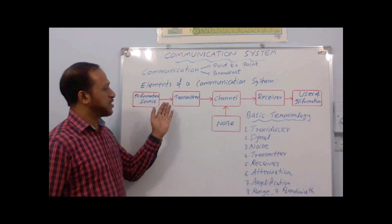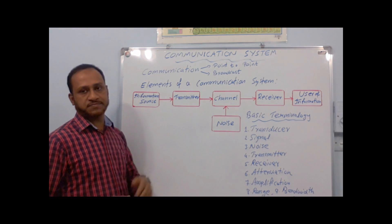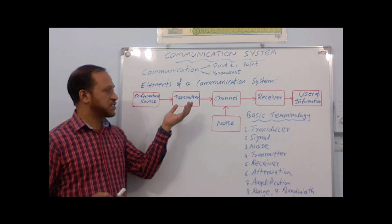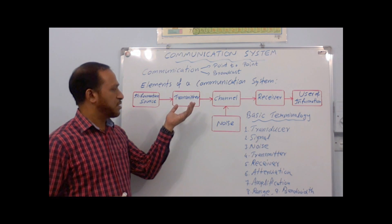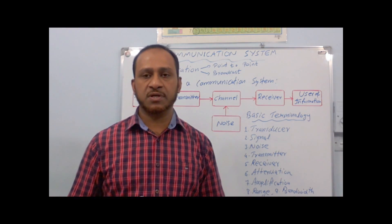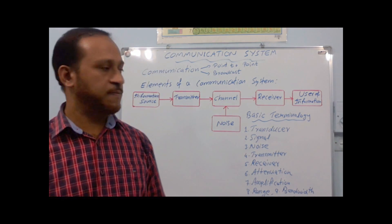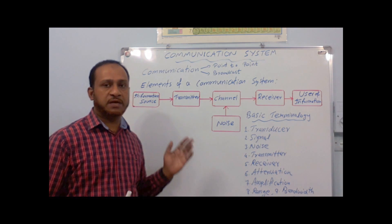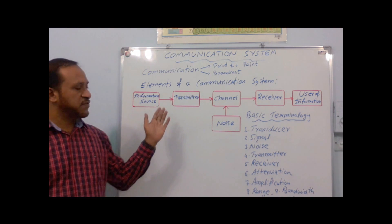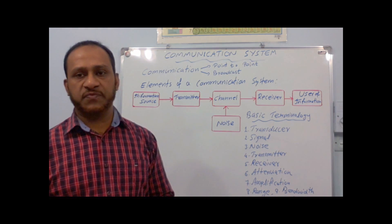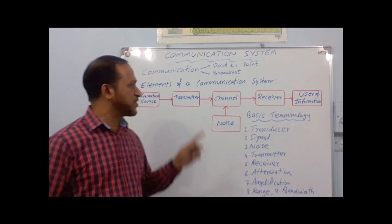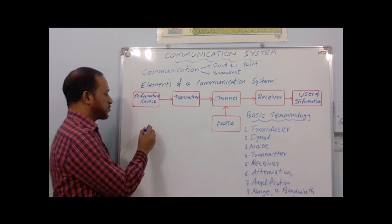The information source should be converted into an electrical signal. A transmitter is the first part of the technological part of the communication system. A transmitter converts a message signal — which can be in the form of sound or visual — into an electromagnetic wave which can be transmitted through a channel. The first part of the transmitter is a transducer.